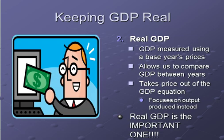To take inflation into account, we look at real GDP. This is GDP measured using a base year's prices. So to calculate the real GDP of 2011, you use the prices from the base year. If we use the year 2000 as our base year, you take the year 2000 prices and apply them to the quantity produced in 2011. This allows you to compare GDP between years by taking price out of the equation, so you don't have to worry about inflation.